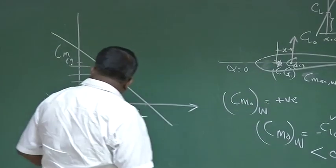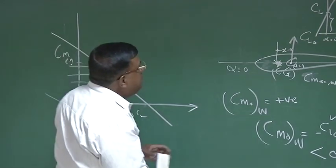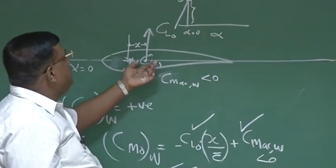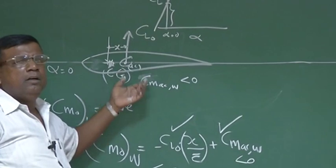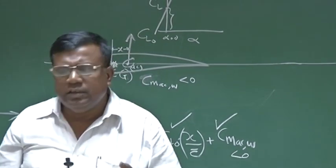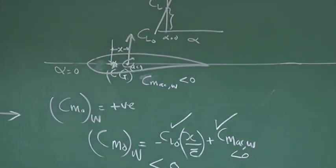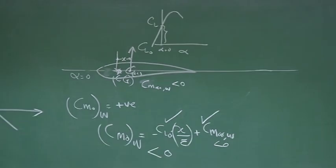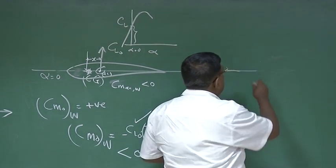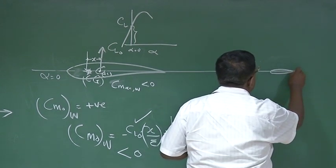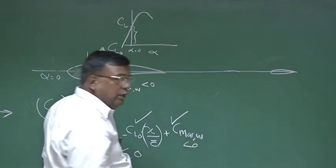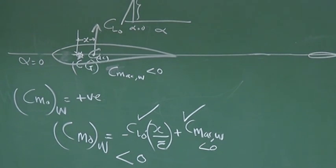The problem is we have tried to use the wing to give stability. But as I discussed in the beginning, the role of wing is not to give stability — the role of wing is to give lift. The role of stability is with the tail. So now, let us look towards the tail — that is the tail-wing combination.